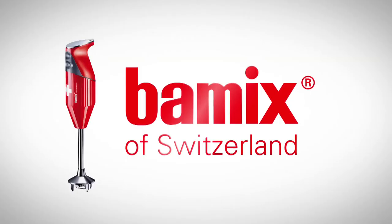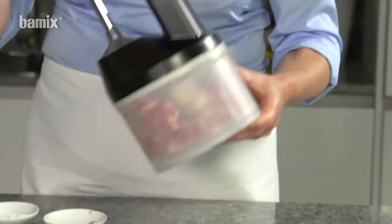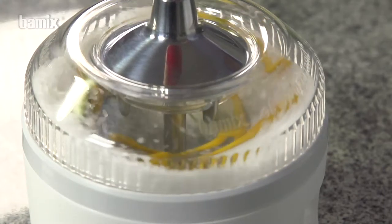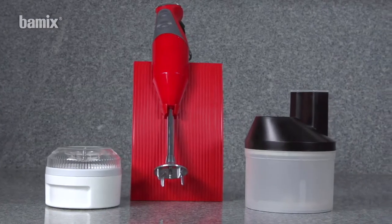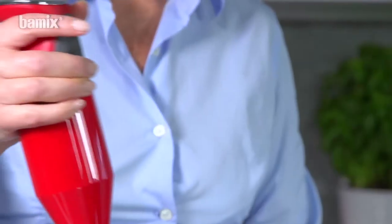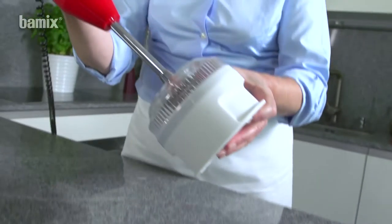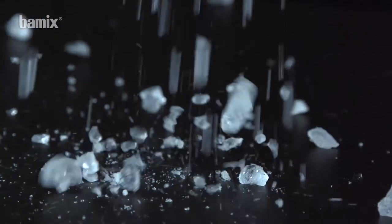Bamix, the kitchen robot. The Bamix is the original and has been on the market since 1954. It is space-saving and ergonomic, lies comfortably in the hand, and is easy to operate. It is extremely powerful and quiet.